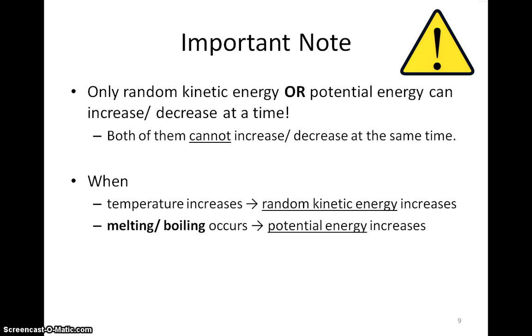There is something very strange about internal energy. Although there are two components for internal energy, only one component can increase or decrease at a time. We cannot have both the random KE and PE increase or decrease at the same time. When the temperature of the matter increases, only the random KE increases. When melting or boiling occurs, only the PE of the particles increases.